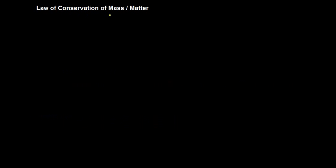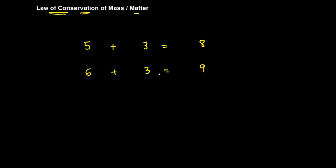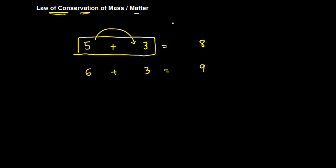The law of conservation of mass, also known as the law of conservation of matter. Before getting into it, I'll give you an example which you would have done in class 1 or 2. If I tell you to add 5 and 3, how much is this going to be equal to? This is going to be equal to 8. Similarly, if I tell you add 6 and 3, this will be equal to 9. Have you heard that when you add 5 and 3, in the process, just because of this addition, one number got lost — and therefore this was not 8 but 7?